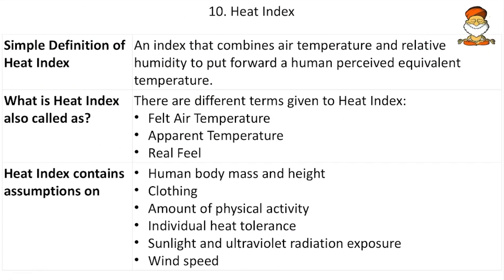Next, the Heat Index. The heat index combines air temperature and relative humidity to put forward a human-perceived equivalent temperature. If moisture is high, even at lower temperatures we feel hot because sweat does not evaporate from our skin. If the atmosphere is dry, even if the temperature is high, we don't feel the heat. Maximum heat is felt when both humidity and temperature are at high levels. This perceived heat is what is discussed in the heat index, which also has terms like 'felt air temperature,' 'apparent temperature,' and 'real feel.'